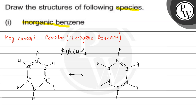These borons and nitrogens are attached with hydrogen atoms. So this is the resonating structure of the borazine. Borazine is an inorganic and cyclic compound.